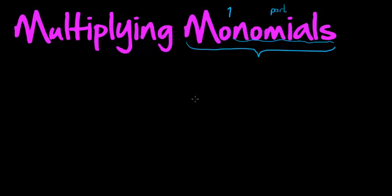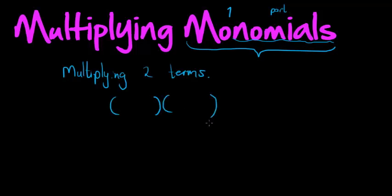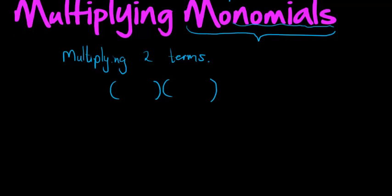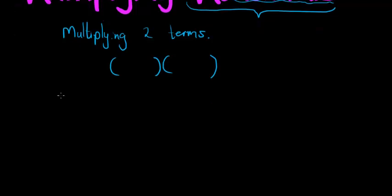So when I'm saying multiplying monomials, I'm actually talking about two terms. When I'm multiplying two terms, it makes sense to put each term in a bracket like that. That's just the common notation when I multiply two terms, and it's simple.